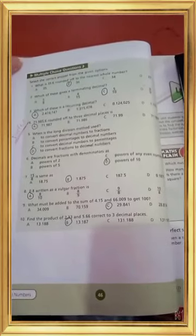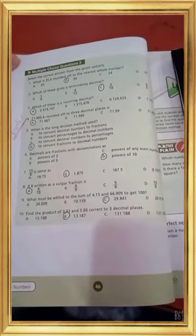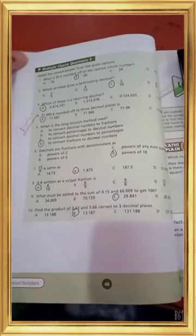What must be added to the sum of 4.15 and 66.009 to get 100? First add 4.15 and 66.009, and then subtract the sum of these two numbers from 100. We get 29.841.